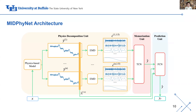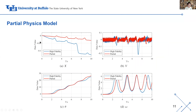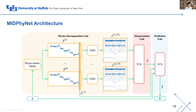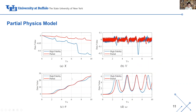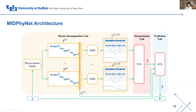This is our method to solve this problem, proposed in 2020. We have x, v, theta, and omega — the behavior of the physics. We use our physics decomposition method to decompose this kind of signal, and use TCN — temporal convolutional neural network — to memorize this signal, and a fully connected layer to predict the behavior of the pendulum.